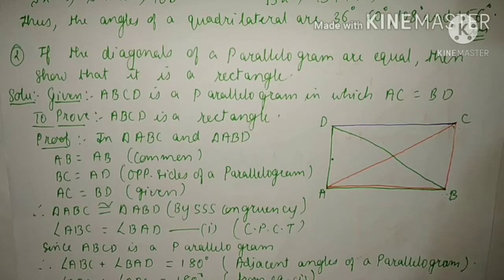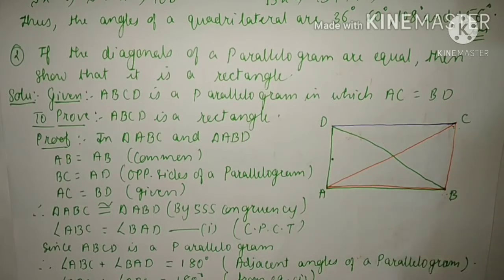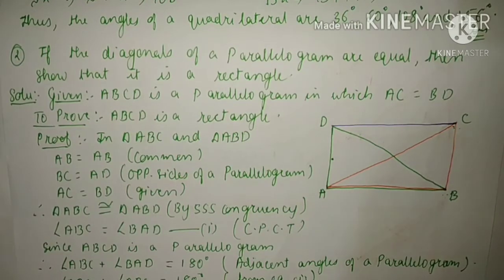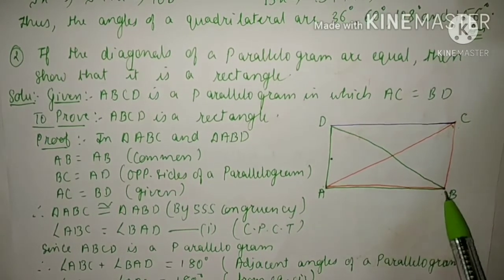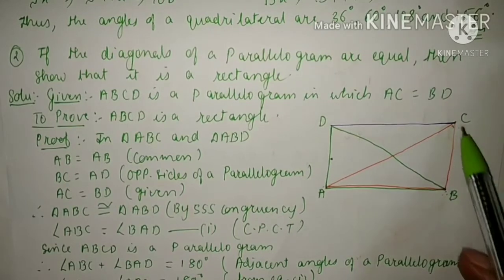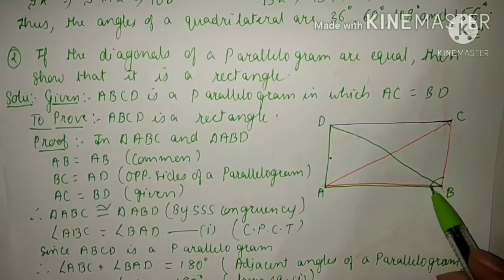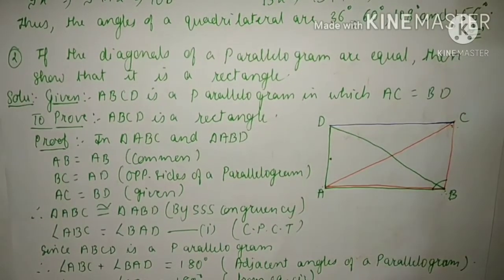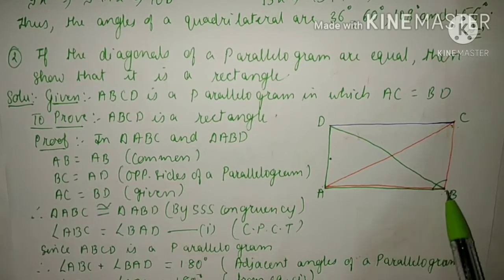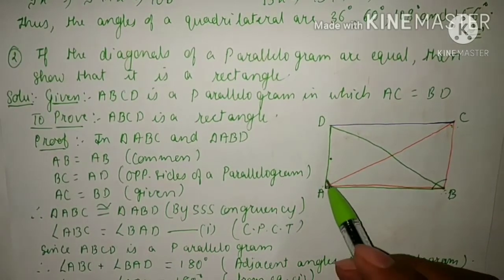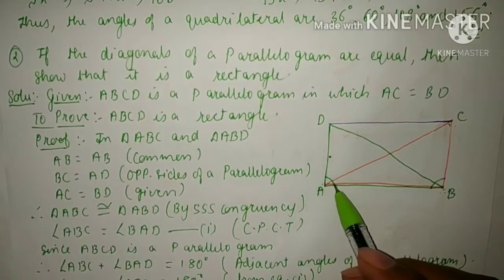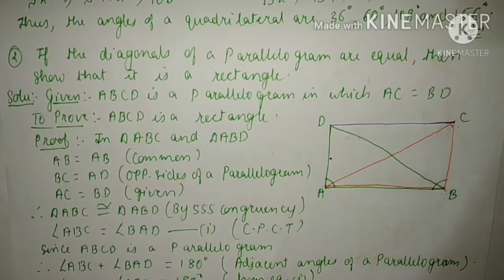Now if these two triangles are congruent, then their corresponding parts will also be equal. So we can say that angle ABC is equal to angle BAD, by CPCT.